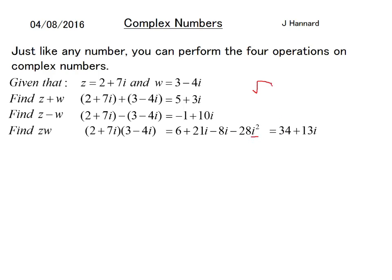Now think of what i² could be. Because it's √-1 times √-1, and we know that a root times a root just pops the number out, so that equals -1, which equals i². Whenever you see i², you can replace it with -1. So it's -28 times -1, which is +28, so we end up with 34 + 13i.